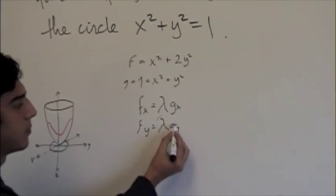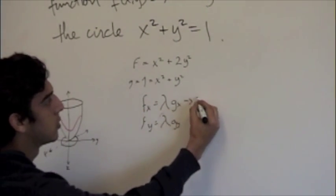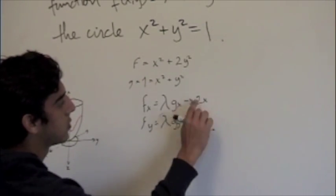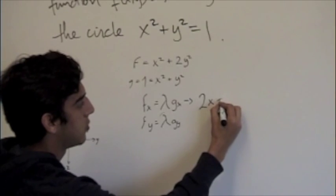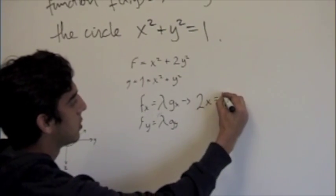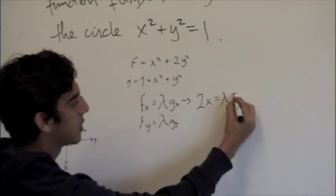We have to take the partials of f. For this one it will be 2x equals lambda times the partial of g with respect to x, which is 2x.